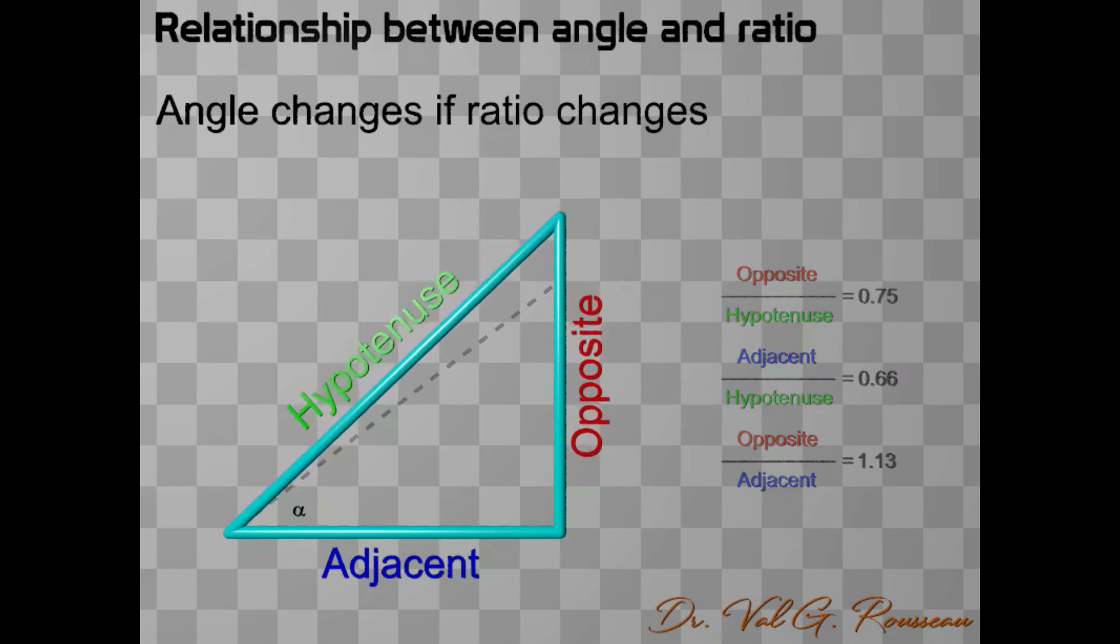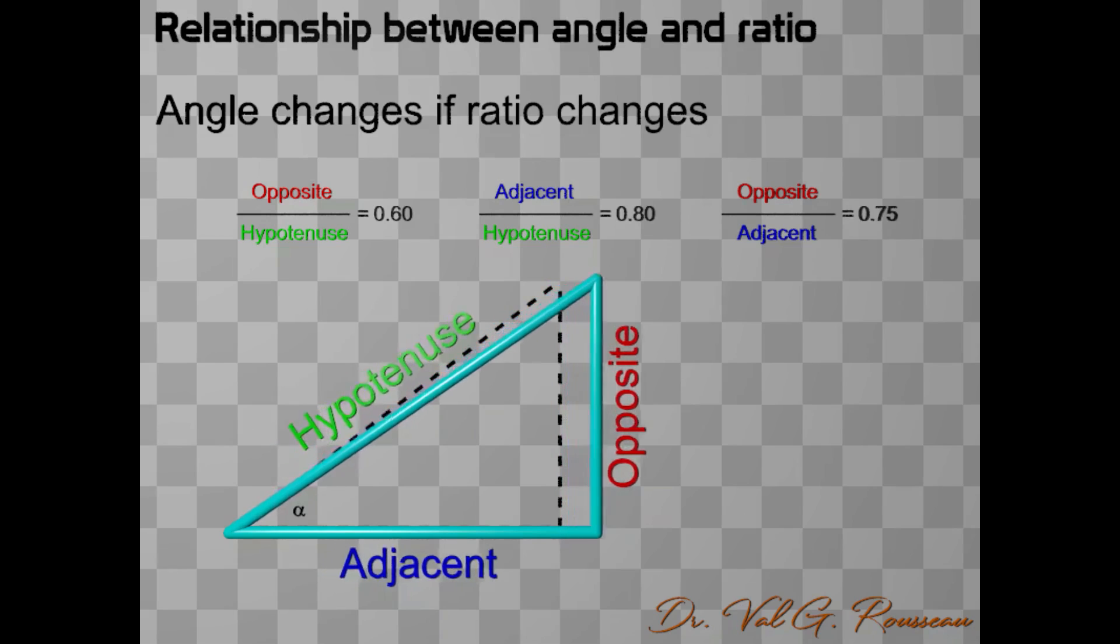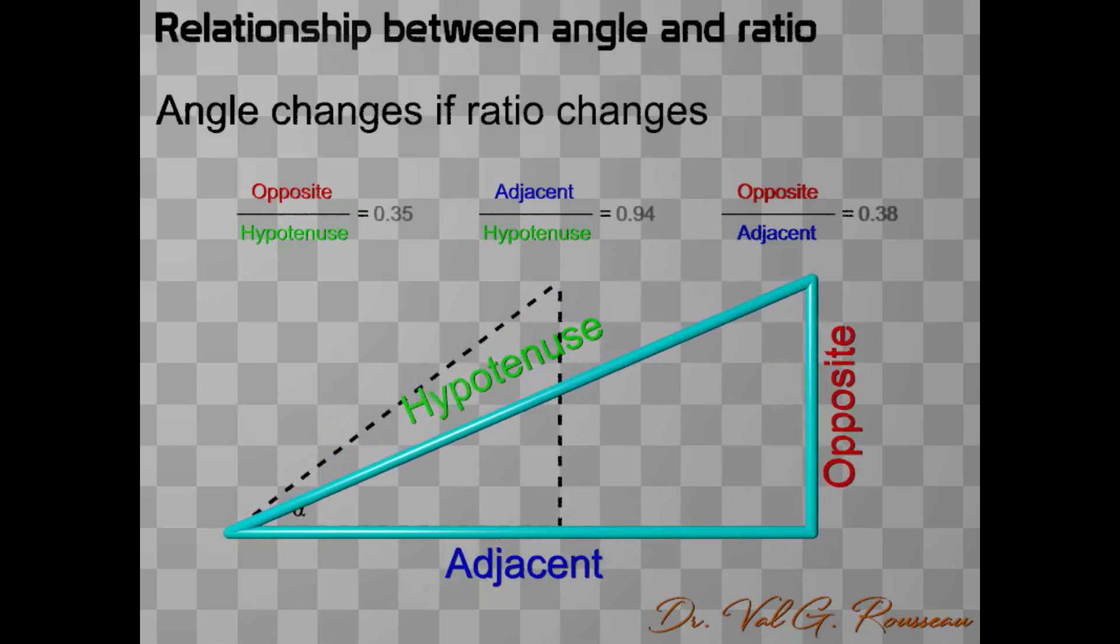Let us go back one more time to our initial triangle with these ratios. If instead of changing the length of the opposite side, we change the adjacent side, all the ratios change again, and so does the angle alpha.